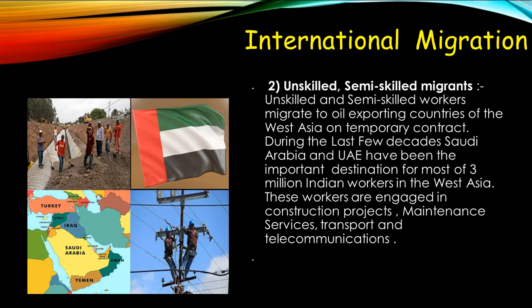Unskilled and semi-skilled migrants migrate to the oil-exporting countries of West Asia on a temporary contract. During the last few decades, Saudi Arabia and UAE have been the important destinations for most of the 3 million Indian workers in West Asia. These workers are engaged in construction projects, maintenance services, and transport and telecommunication services. Nearly three-fifths of the workers going to West Asia are from Kerala, Tamil Nadu, Telangana, and Andhra Pradesh. Unskilled means they don't have any specialized skill, and they go mostly to West Asia for construction, maintenance, or labor work.